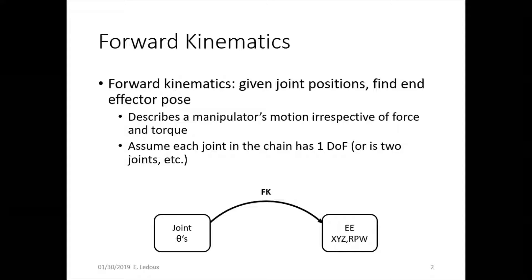We assume that each joint in the chain of a robot has one degree of freedom, so it can move in one direction. Otherwise you need to make it two joints.